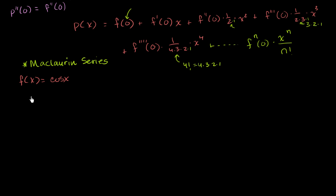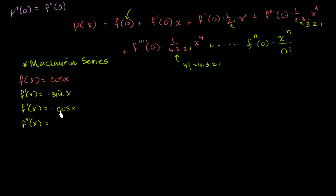If we take the first derivative, the derivative of cosine of x is negative sine of x. If we take the derivative of that, the derivative of sine of x is cosine of x, but we have that negative there, so it's negative cosine of x. If we take the derivative of that — this is the third derivative of cosine of x — it's going to be positive sine of x. And if we take the derivative of that, the fourth derivative, we get cosine of x again.